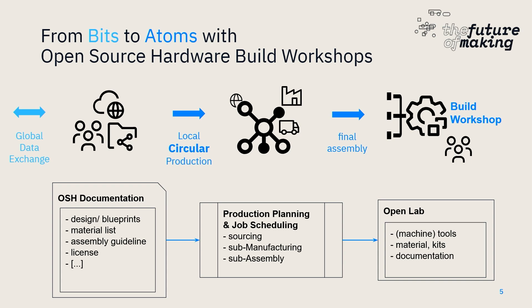This is what we conducted here in Hamburg. We did the production process: traditional production planning and job scheduling, sourcing the materials, sub-manufacturing, preparing the materials, sub-assembly, and developing kits out of it. The final step was the build workshops — which in a production chain would be the final assembly — with the labs providing the machines, materials, and documentation.